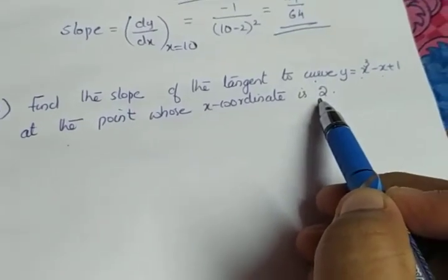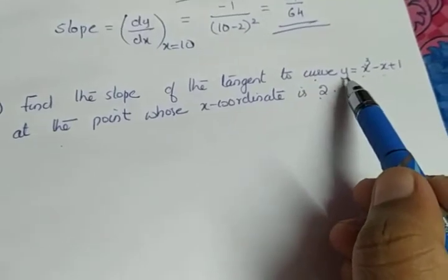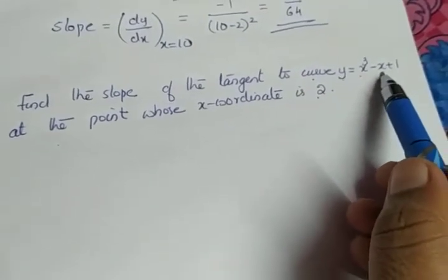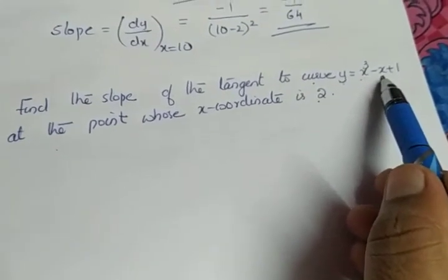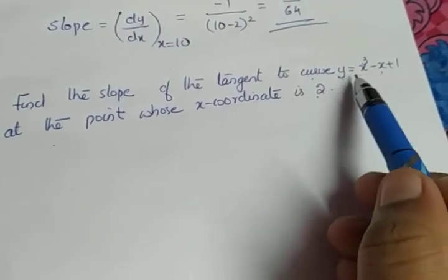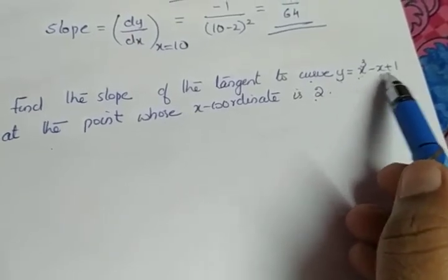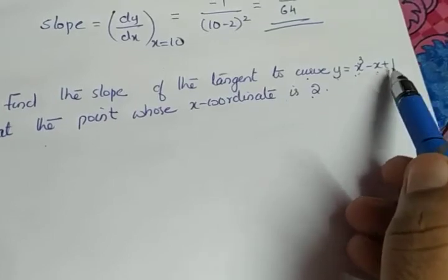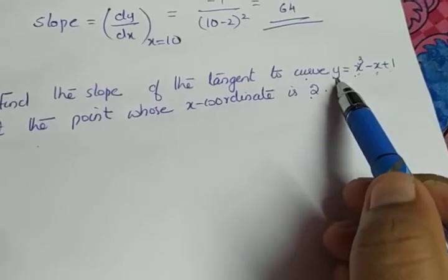Then can you say what will be the y coordinate? The given curve is y equals x³ minus x plus 1. If you need to find the y coordinate, what we have to do is substitute the value of x as 2 here. So 2³ minus 2 plus 1 will be the corresponding y coordinate.